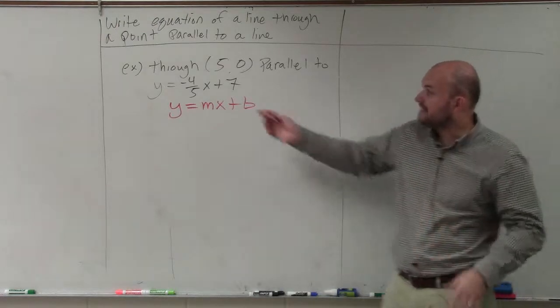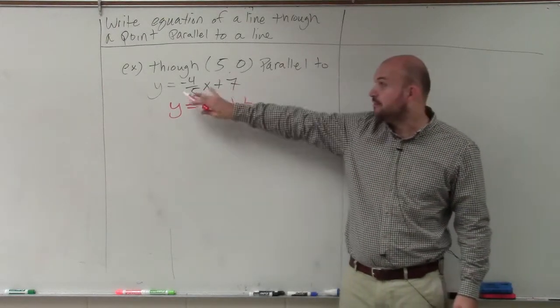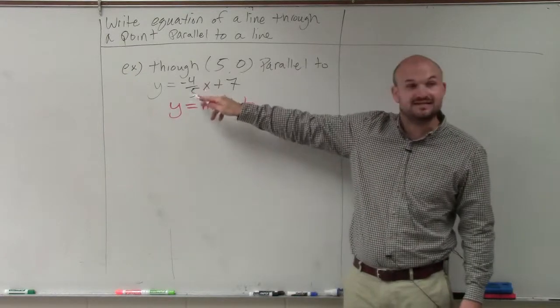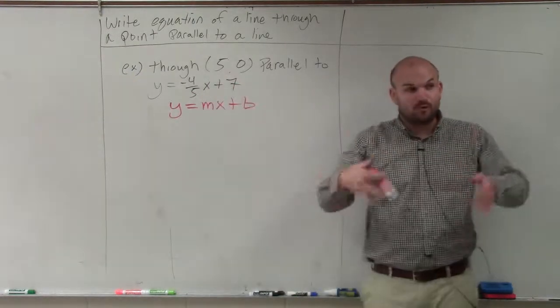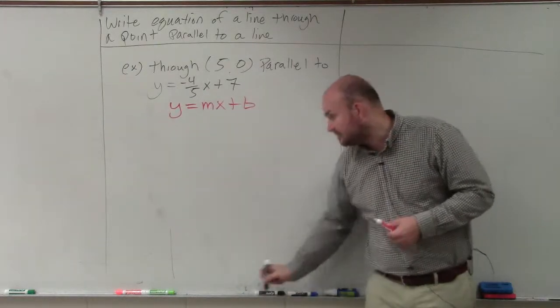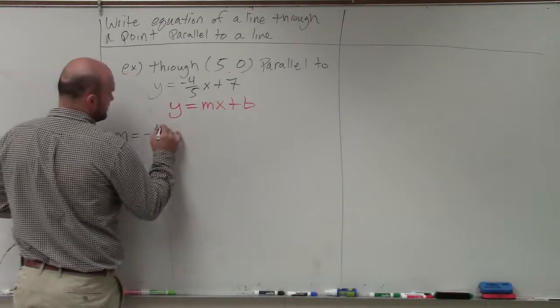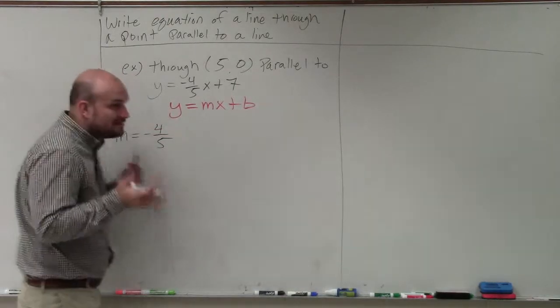What's important is if it has to be parallel to this equation, we need to know what this equation's slope is. The slope is -4/5. Remember, we're writing a new equation in the form y = mx + b. So we know that m = -4/5. That's going to be our new slope.